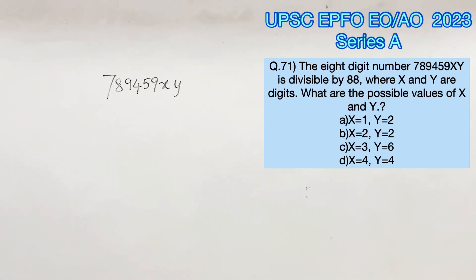Welcome to Aptitude Destination. Please pause the video and read the question completely. The given 8-digit number is divisible by 88 where x and y are digits.